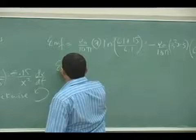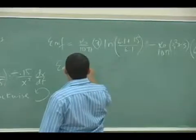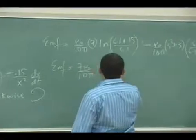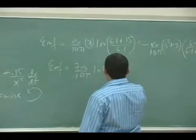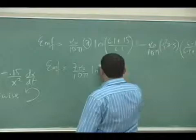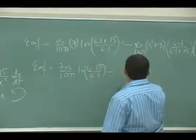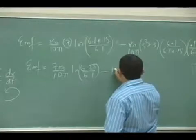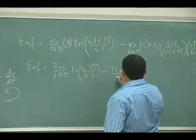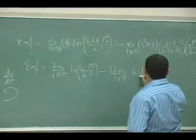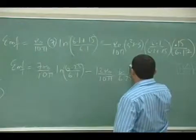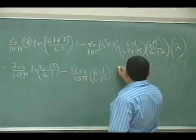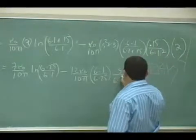So EMF equals 7 mu 0 over 10 pi, ln of, that's going to be 6.25 over 6.1 minus, that's 9 plus 3, 12, mu 0 over 10 pi, 6.1 over 6.25 times, it's going to be 3 divided by 6.1 squared.